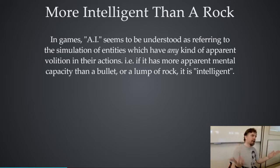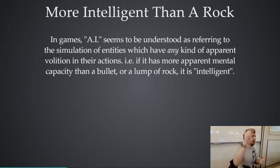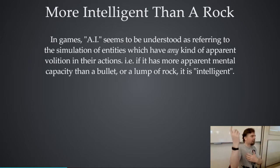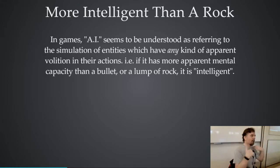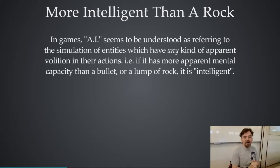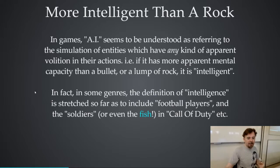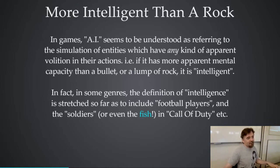It's basically just anything that, if it were real, would have a brain. Asteroids don't have brains. But if you had an enemy ship or something like that that tries to attack you, at some level, if it were real, that spaceship would have something inside it with a brain driving it. So it's just like, if you're doing the world's simplest brain simulation, we allow ourselves to pretend that it's AI. In some games the definition of intelligence is so broad as to include things like football players in a soccer game, or soldiers in a war shoot-em-up — they're AI.